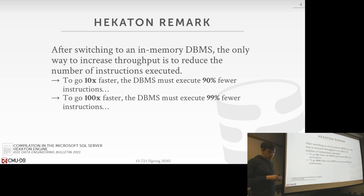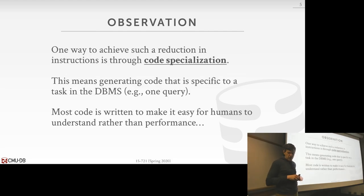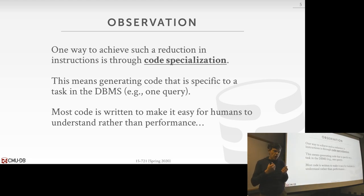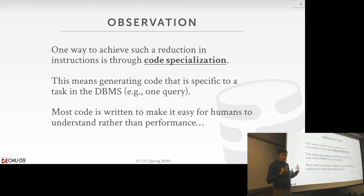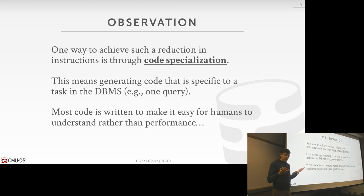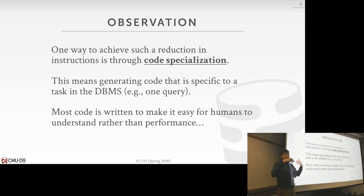This is why we want to do code specialization or query compilation. The idea is that instead of having general-purpose code to process queries, we generate code specific to the one task we're trying to complete — for our purposes, always a query. Rather than running through a general-purpose system, we generate code that is hard-coded just to execute that one query. In a general-purpose system there's all this indirection — switch statements to deal with all possible data types, operands, predicates, and aggregations. We strip it down to be exactly the instructions needed to execute that query.